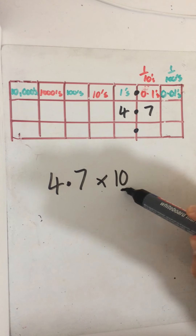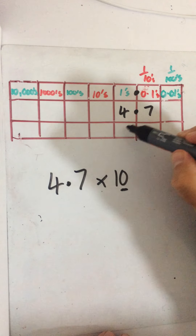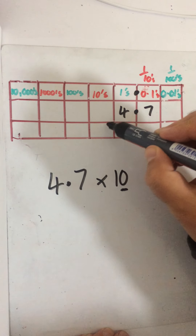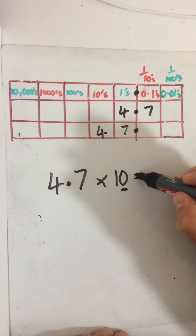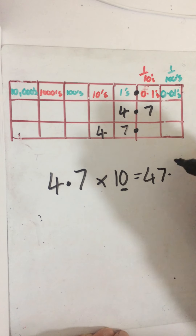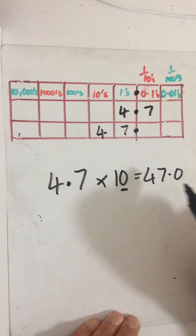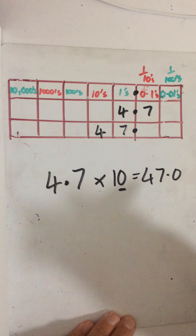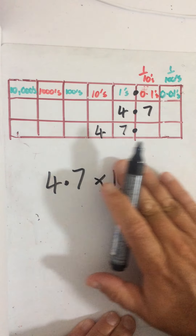So 10 has one zero, so I'm just going to move my seven one place to the left, and my four one place to the left. I'm actually left with 47 — 47 point nothing. So this is my answer, 47. I can put point zero if I want to, but I don't have to have it in there at all. It does go to show that I've moved the numbers one place to the left when I'm multiplying by 10.